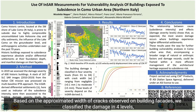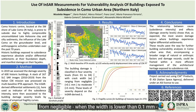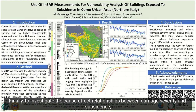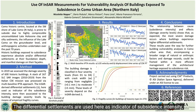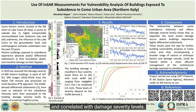Based on the approximated widths of cracks observed on building facades, we classified the damage in four levels, from negligible when the width is lower than 0.1 mm, to moderate when the width is greater than 5 mm. Finally, to investigate the cause-effect relationships between damage severity and subsidence, we exploited the InSAR point targets to calculate the differential settlements experienced by each building. The differential settlements are used here as an indicator of subsidence intensity and correlated with damage severity levels.